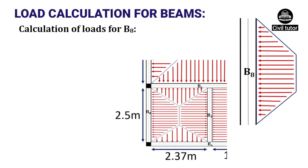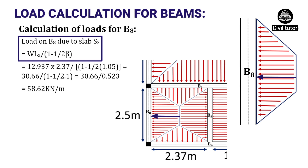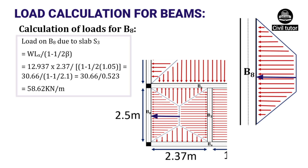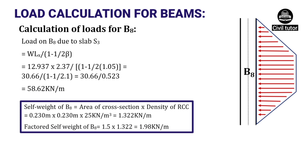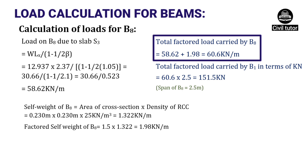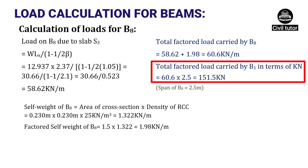For beam B8, it carries the left trapezoidal portion of slab S3, given by W·Lx·(1 − 1/(2β)), where W = 12.937 kN/m², Lx = 2.37 m, and β = Ly/Lx = 2.5/2.37. Substituting, the load on B8 due to S3 = 58.62 kN/m. Self weight = 1.322 kN/m and factored self weight = 1.98 kN/m. Total factored load on B8 = 60.6 kN/m. In kN: 60.6 × 2.5 m = 151.5 kN.